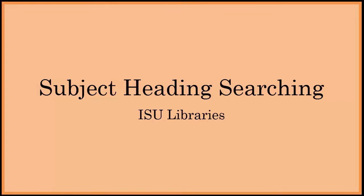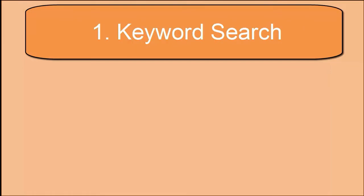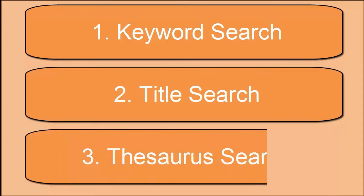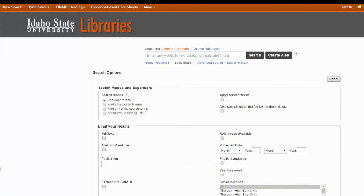Searching using subject headings isn't that hard and it will make your search so much better. We can find subject headings that match our topic in three different ways. We can start with a basic keyword search, copy and paste the title of an article you already have, or search the subject heading thesaurus, which is basically a collection of all the subject headings in one database. We'll start with the first option: running a basic keyword search in order to track down some subject headings.